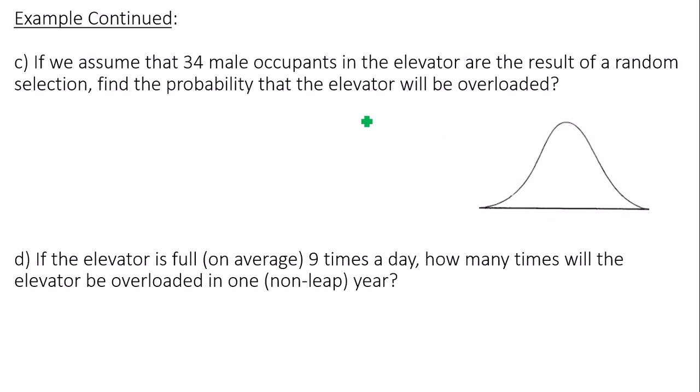So what the central limit theorem says is that out of the population of men, if I randomly select 34 and I find their average, I'm going to get some sort of value. Then I take another 34 men randomly selected, take their average, find their mean, x-bar.